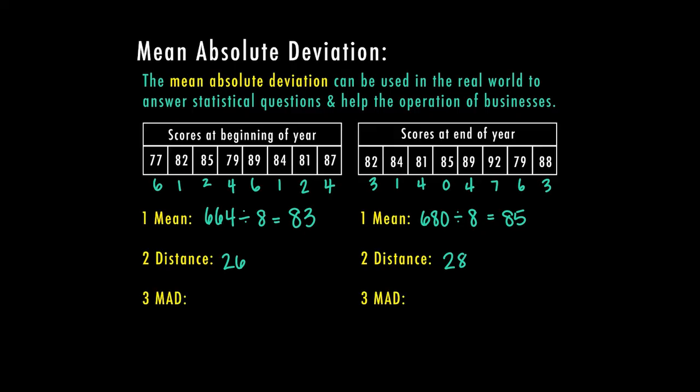Then my last step is to calculate the mean absolute deviation. So I'm going to take 26 divided by 8 and I end up with 3.25. Over here if I take 28 and divide it by 8 I end up with 3.5.